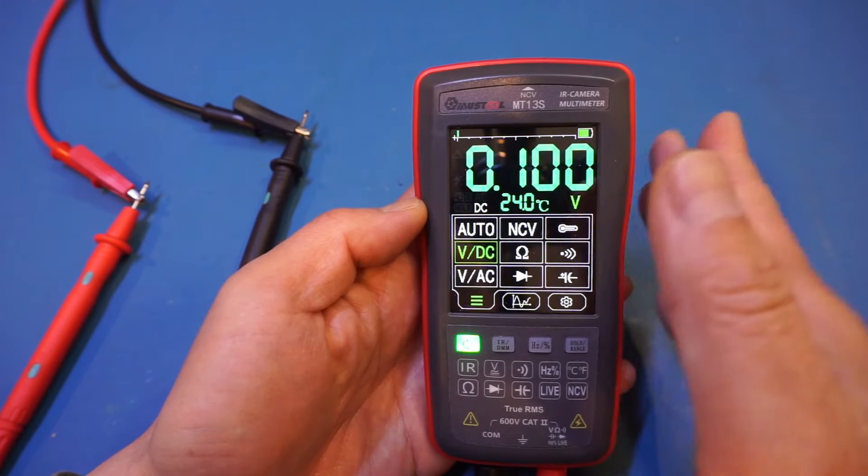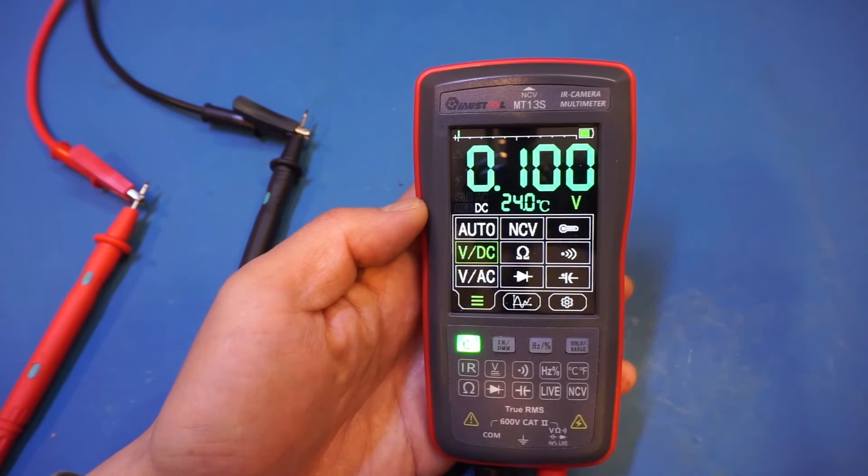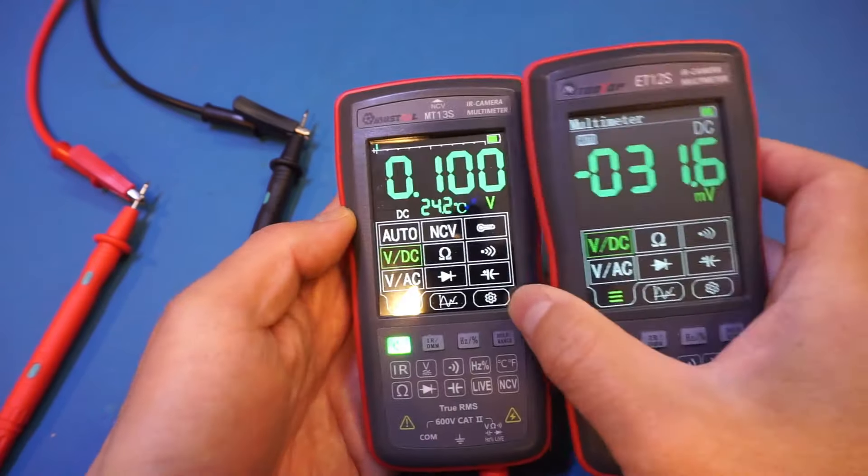So this is interesting. This meter has a higher count, but at millivolt range, it loses one digit of resolution. That is really unfortunate.